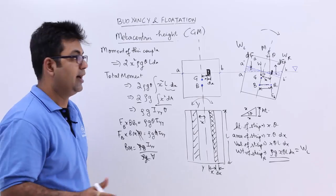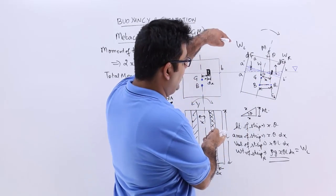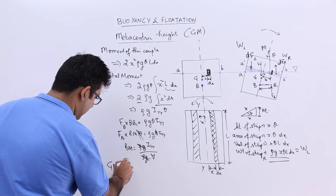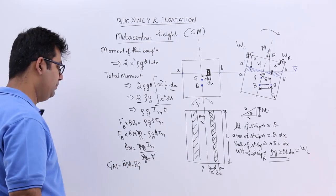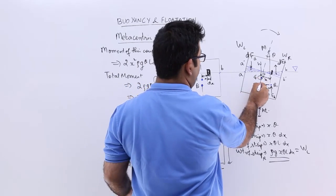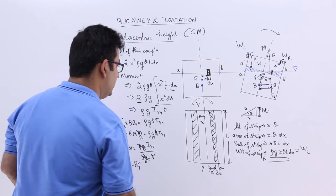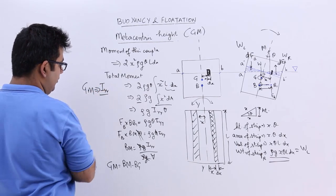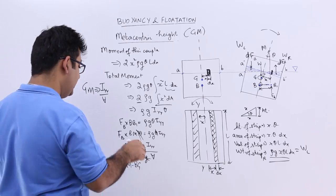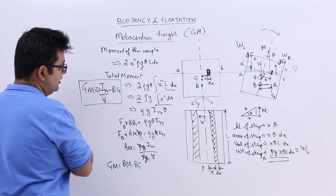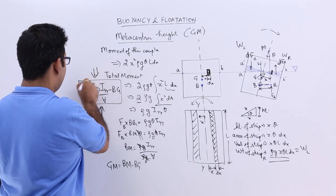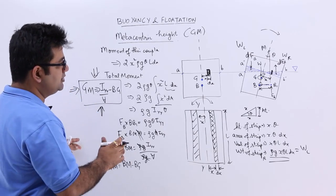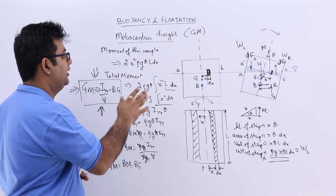We need GM, not BM. GM = BM minus BG. BG is easily calculated as the distance between the centre of gravity and the centre of buoyancy. So the final formula for metacentric height is: GM = I_yy / V_immersed minus BG. This is the formula to calculate the numerical value of GM for any body. Let's look at a numerical application of metacentric height in the next video.